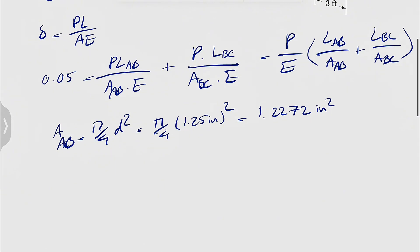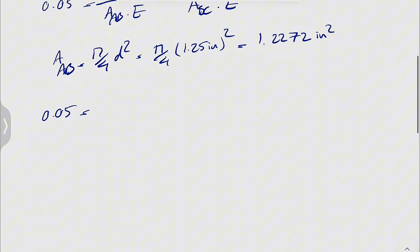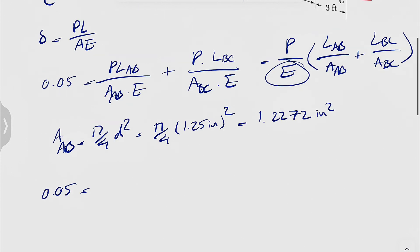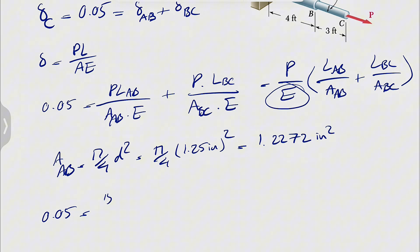We just have to put this in the previous equation. 0.05, the force P from the question we know is 15 kips, but since we have the elastic modulus in PSI, or pound per inch squared, we're just going to convert the 15 to pounds. So 15 kips is equal to 15,000 pounds.